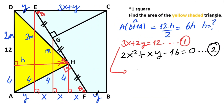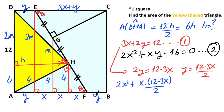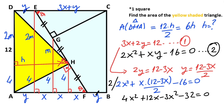If we take the value of y from the first equation and substitute it into the second equation, we get the value of x. Substituting y into the second equation: 2x squared plus x times (12 minus 3x) over 2 minus 16 equals 0. Multiplying both sides by 2 gives: x squared plus 12x minus 32 equals 0.